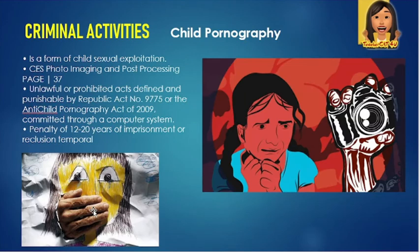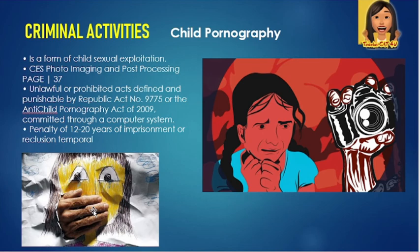Child pornography is a form of child sexual exploitation involving the use of minors, mostly 17 years old and below. It is defined and punishable under Republic Act 9775, the Anti-Child Pornography Act of 2009. Most cases are committed using ICT. The penalty upon proof of the act is 12 to 20 years of imprisonment, known as reclusion temporal.